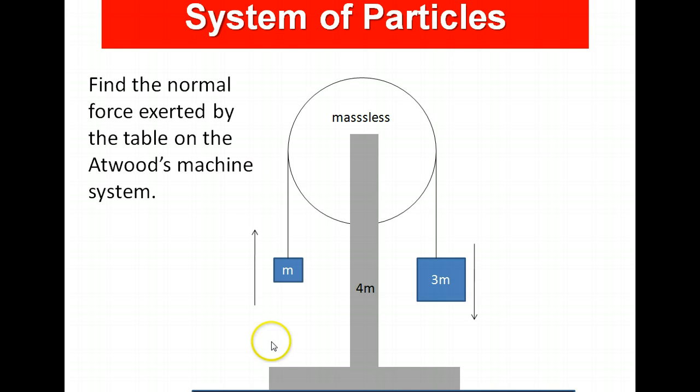Looking at this Atwood's machine as the entire system, we see that different parts have different accelerations. 4m has acceleration zero, m has the acceleration upward, 3m has an acceleration downward. And there's also the force of the table on the machine, and that's an upward force. So knowing the equation that we derived on the previous slide about the net force in the system, this will allow us to calculate the normal force acting on the system. So this is a particular example in which different parts of the problem are actually moving with accelerations, in this case, in different directions.